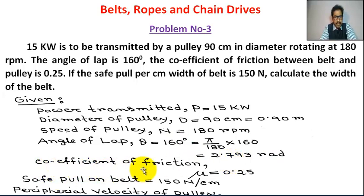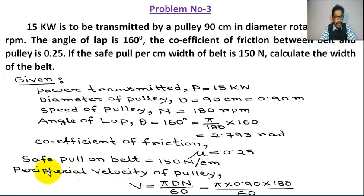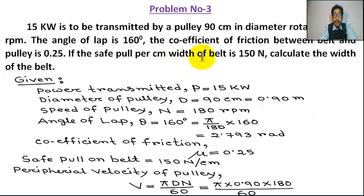Coefficient of friction mu equal to 0.25 — that is the coefficient of friction between belt and pulley. Safe pull on belt is 150 Newton per centimeter width.